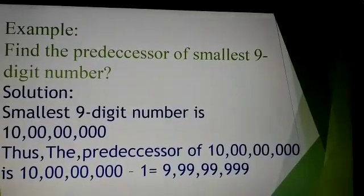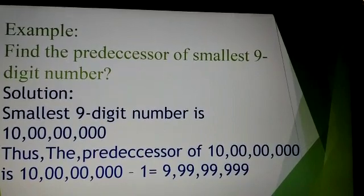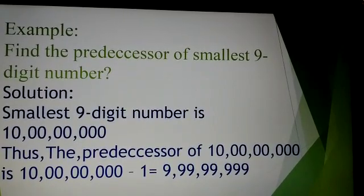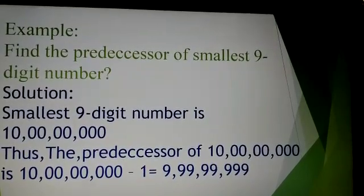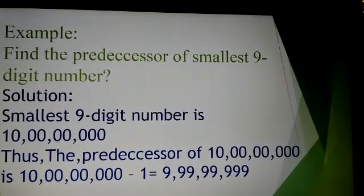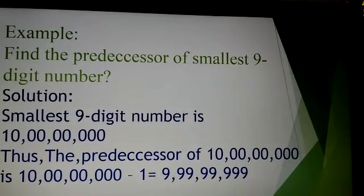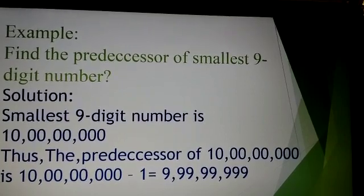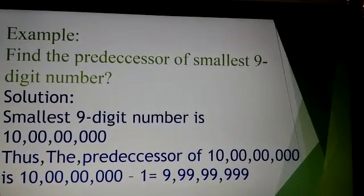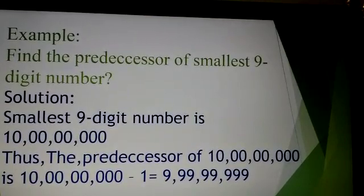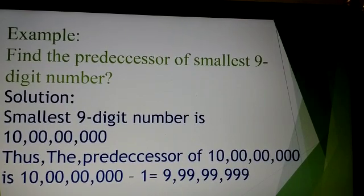Let us take another example. Find the predecessor of the smallest 9-digit number. Solution: the smallest 9-digit number is 10 crore. Thus, the predecessor of 10 crore is 10 crore minus 1, which is equal to 9 crore 99,99,999.